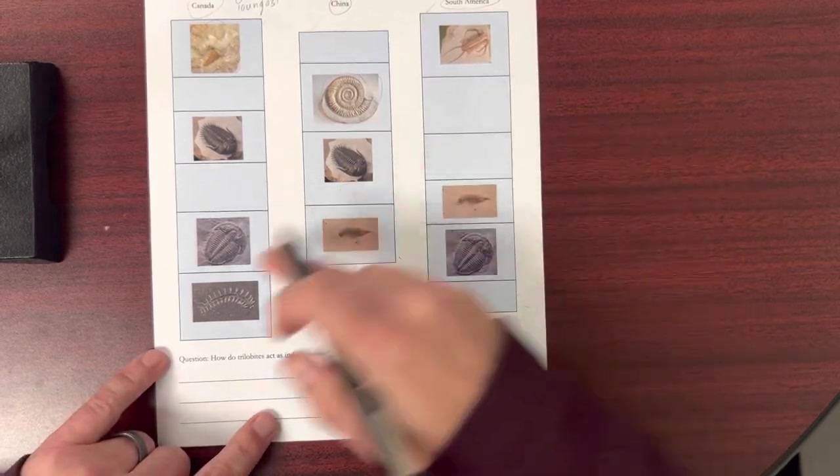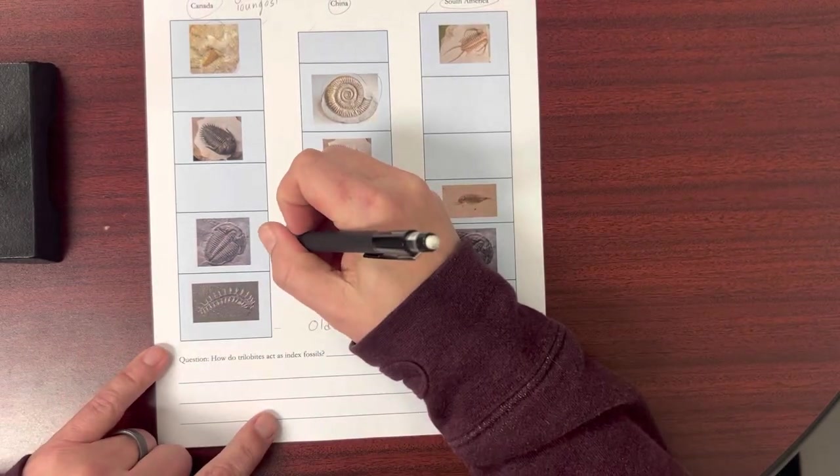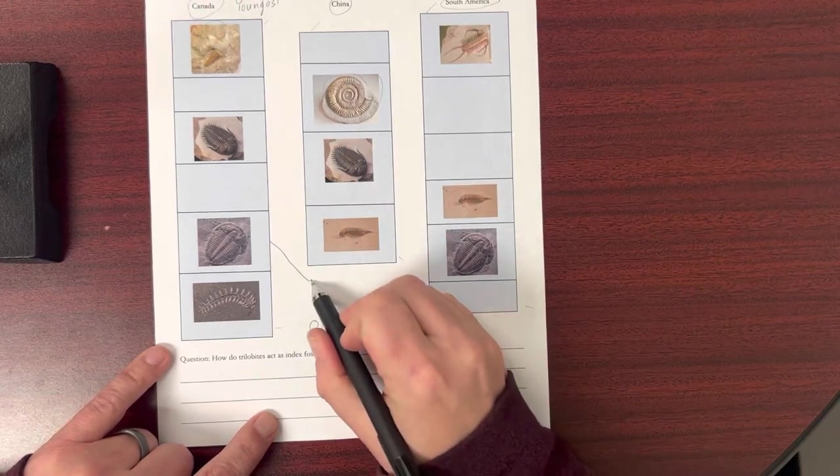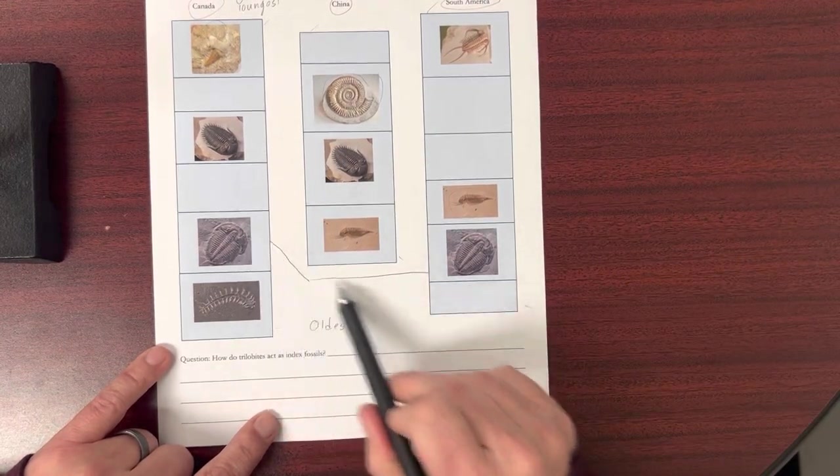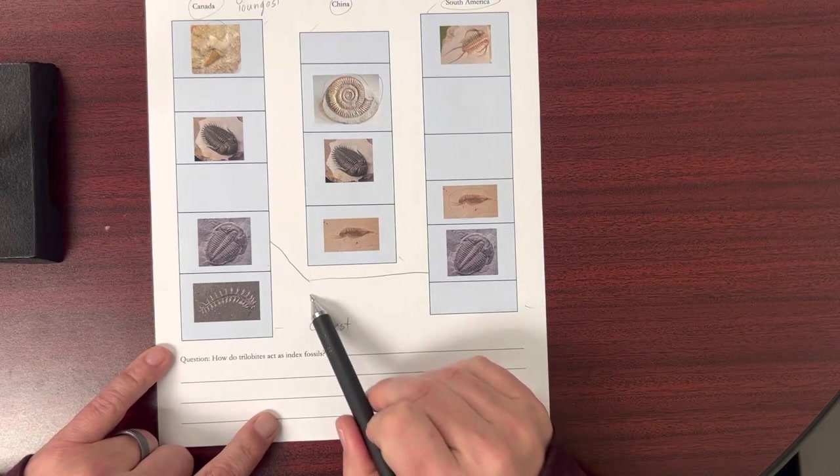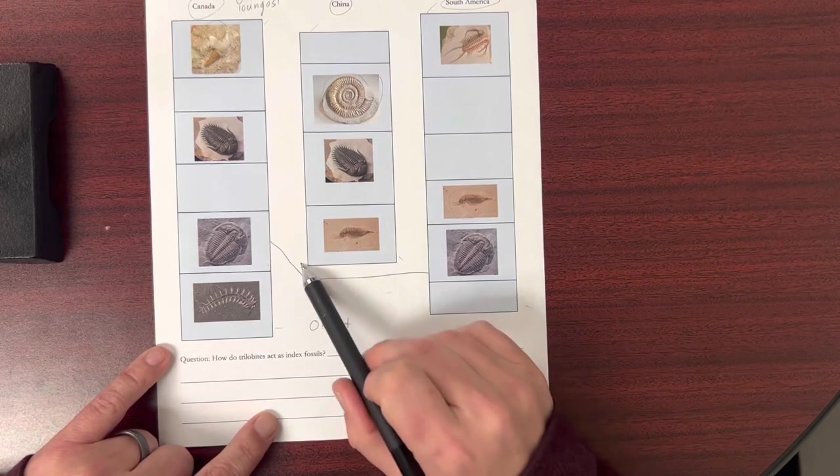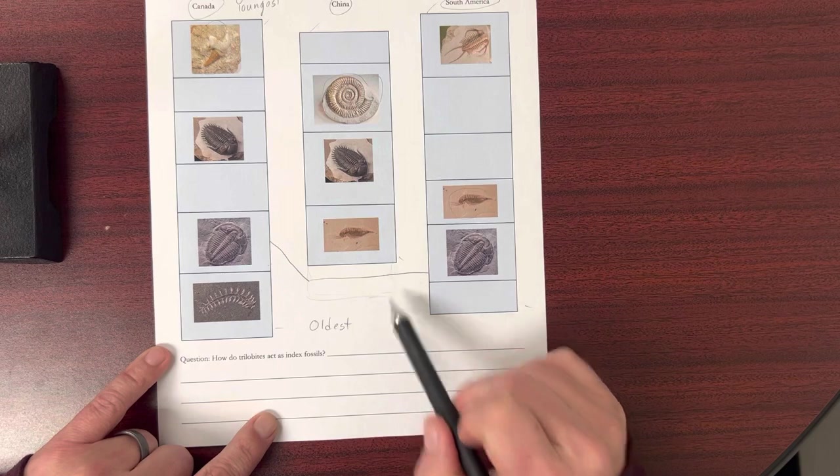In this particular case, to connect them across, I'd have to go and draw a line like this, right? These layers are connected. We don't have this missing layer for this one. It's just not part of the fossil record.